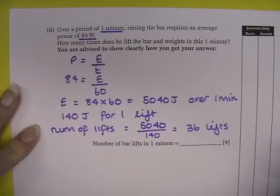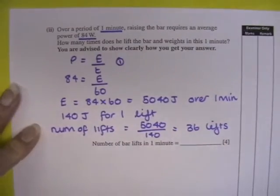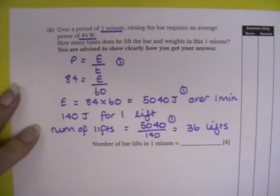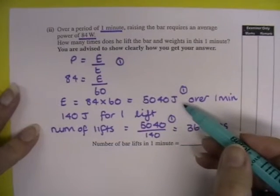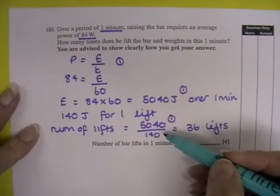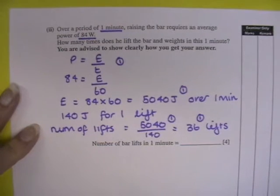Now how would your marks be allocated for that question? 1 for the equation to start with, 1 for working out the energy used up over a minute, 1 then for working out that the number of lifts is energy over the full minute divided by energy per lift, and a final mark then for finding that it's 36 lifts. That gives you 4 marks.